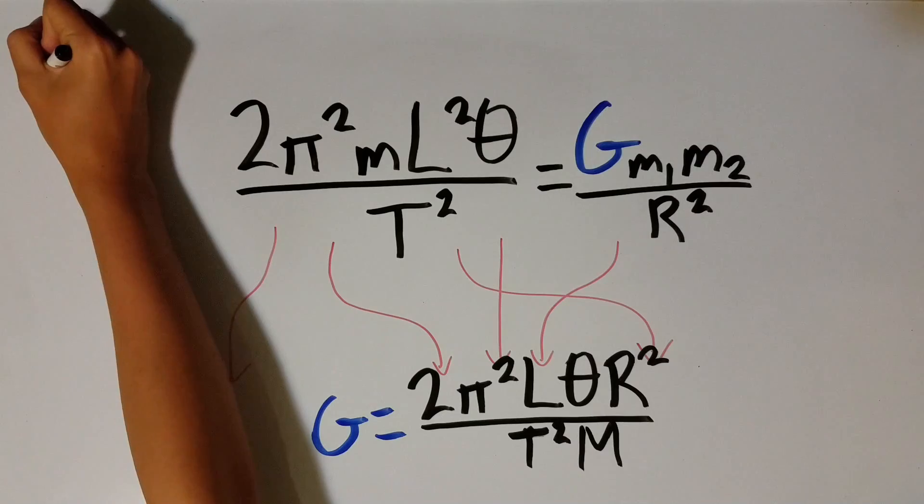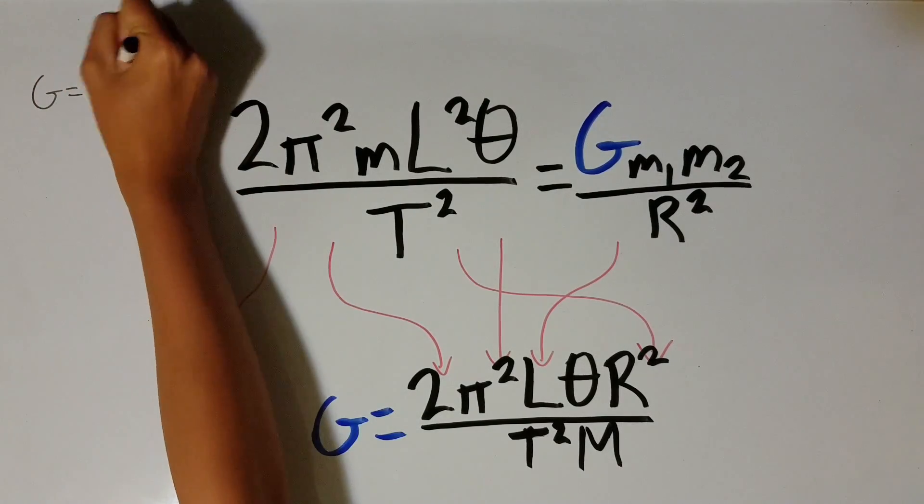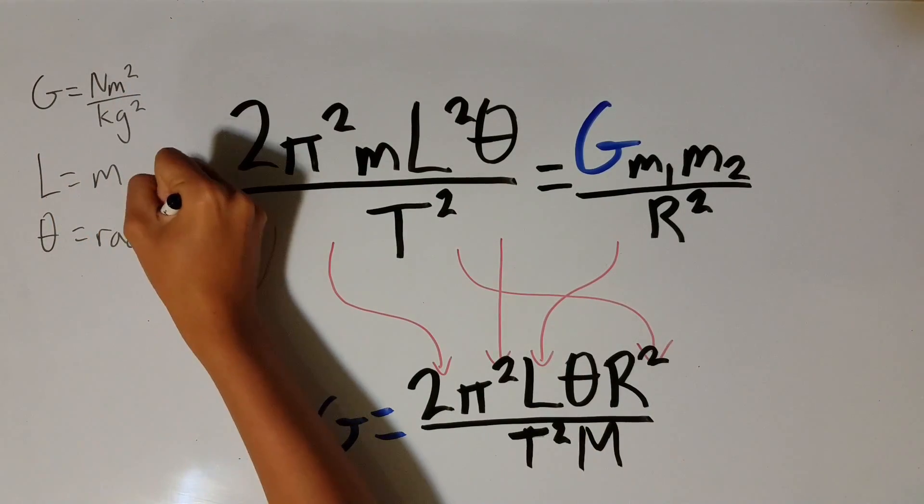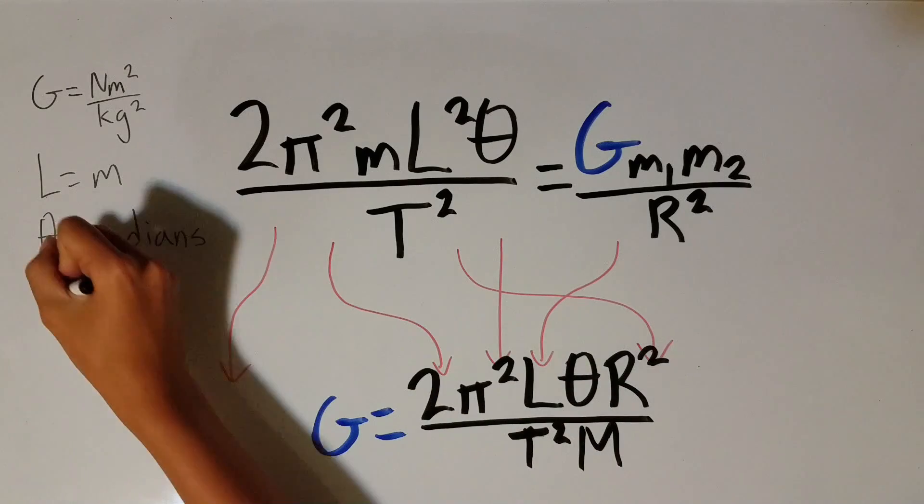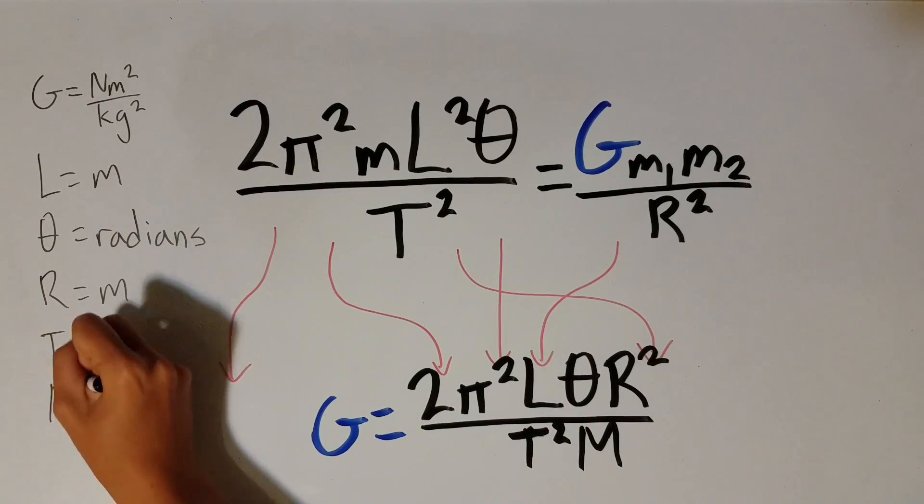G is the gravitational constant in Newton meters squared divided by kilograms squared. L is the total length of the rod in meters. Theta is the angle in radians the rod rotates while oscillating, which will be explained in a moment. R is the distance in meters between the equilibrium point and the center of the fixed mass. T is the period of oscillation in seconds and M is the value of the larger mass.